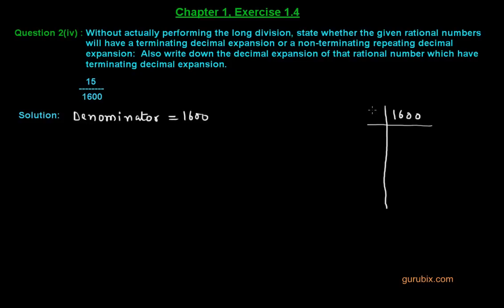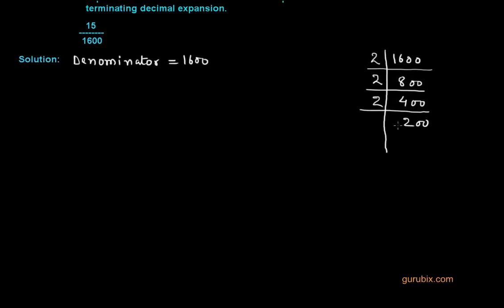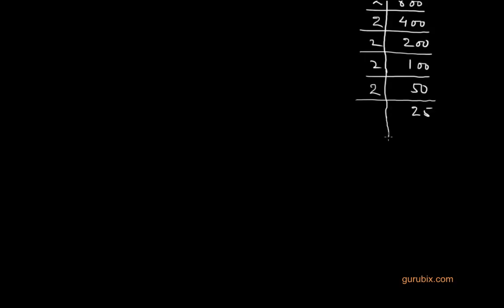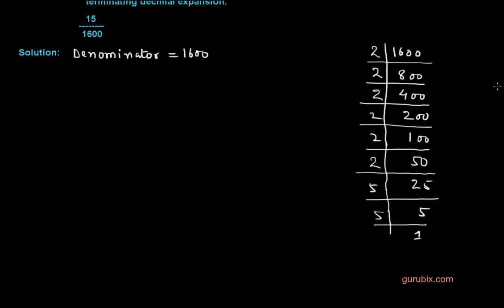So first we shall divide 1600 by 2 to get 800. We see that 800 can also be divided by 2 to get 400. 400 is also divisible by 2 to get 200, and 200 is also divisible by 2 to get 100. 100 can also be divided by 2 to get 50, and 50 can also be divided by 2 to get 25. Now 25 can be divided by 5 to get 5, and 5 is only divisible by 5, giving us 1 as the quotient.